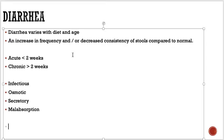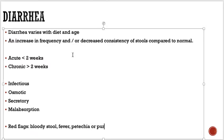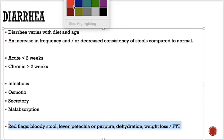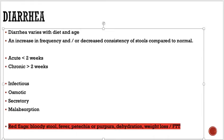In the physical examination, the most important thing is the hydration status of the patient. In diarrhea, we also look for red flags which point towards sinister or fatal causes — for example, bloody diarrhea, fever, petechiae or purpura, high aggression, or the child presenting with weight loss, also called failure to thrive. All these are red flags and need proper investigation.